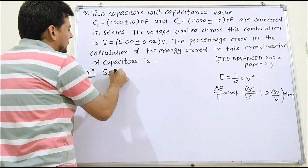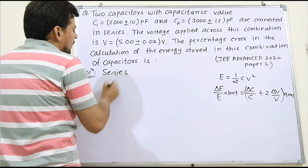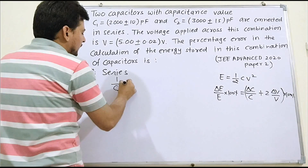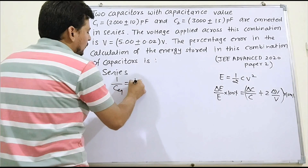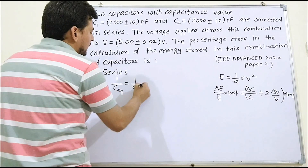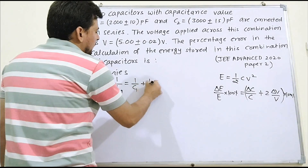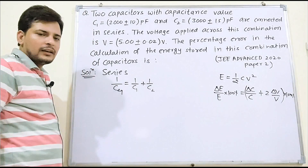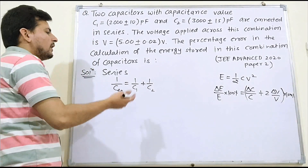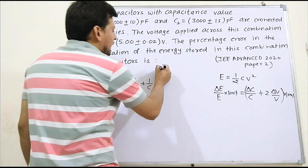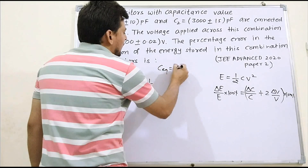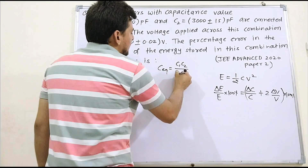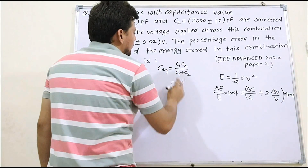For two capacitors in series, the formula is: 1/C_equivalent = 1/C1 + 1/C2. Error analysis will be done from this. Alternatively, you can find C_equivalent as C1·C2 divided by C1 plus C2.